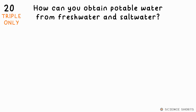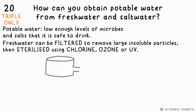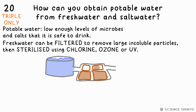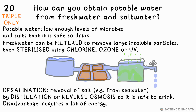How is potable water made from fresh water and salt water? Fresh water can be filtered to remove large and soluble particles, then sterilized using chlorine, ozone, or UV. You must remove salt from salt water before it's safe to drink — this is desalination. You can use distillation or reverse osmosis to do this, though both require a lot of energy.